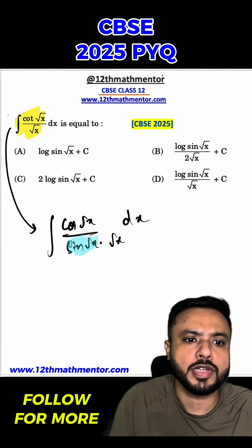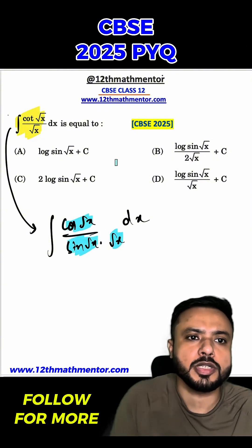Now we can clearly see here that a part of derivative of sin of root x, which is cos of root x by root x, is present over here.